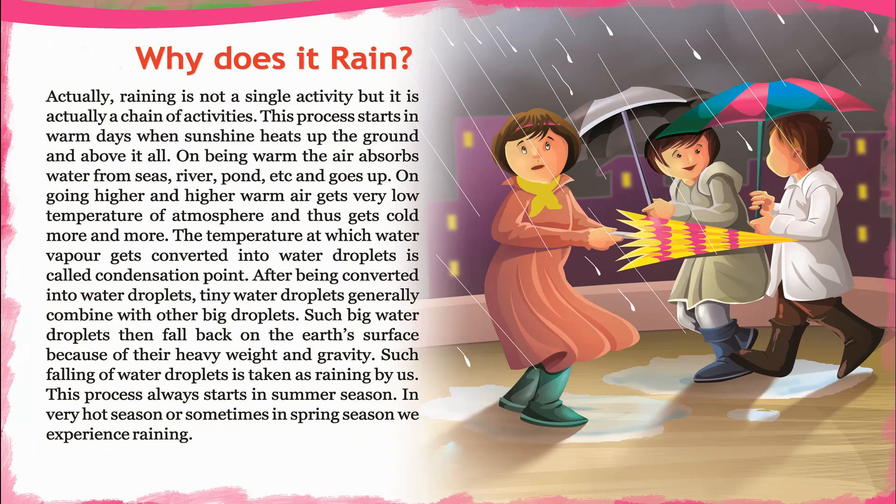Why does it rain? Raining is not a single activity but actually a chain of activities. The process starts on warm days when sunshine heats up the ground. The warm air above absorbs water from seas, rivers, ponds, and so on, and rises upward. As it goes higher and higher, the warm air meets the very low temperatures of the atmosphere and gets cold.